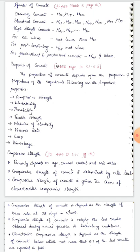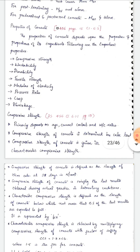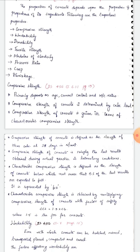The properties of concrete depend upon the properties and proportion of its ingredients — cement, sand, coarse aggregate, and water. The key properties of concrete are: compressive strength, workability, durability, tensile strength, modulus of elasticity, Poisson's ratio, creep, and shrinkage.